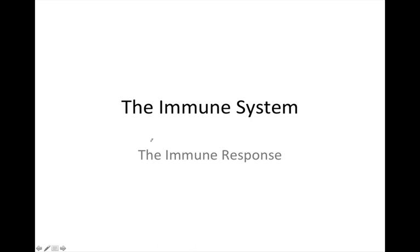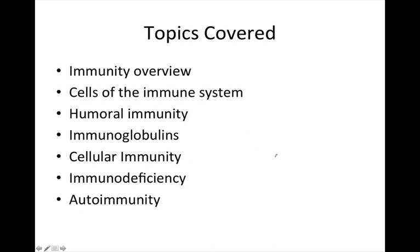In the previous videos we talked about the organs of the lymphatic system and the cells that populate them, primarily lymphocytes and phagocytes. In this video we're going to talk about some general concepts related to the immune response and how we use the immune system to carry out defensive actions. We'll give a brief overview of immunity, cover the cells of immunity, then talk about cellular immunity first, then humoral immunity and immunoglobulins, and then what can happen when the immune system goes wrong. This will be over a series of a couple of videos.